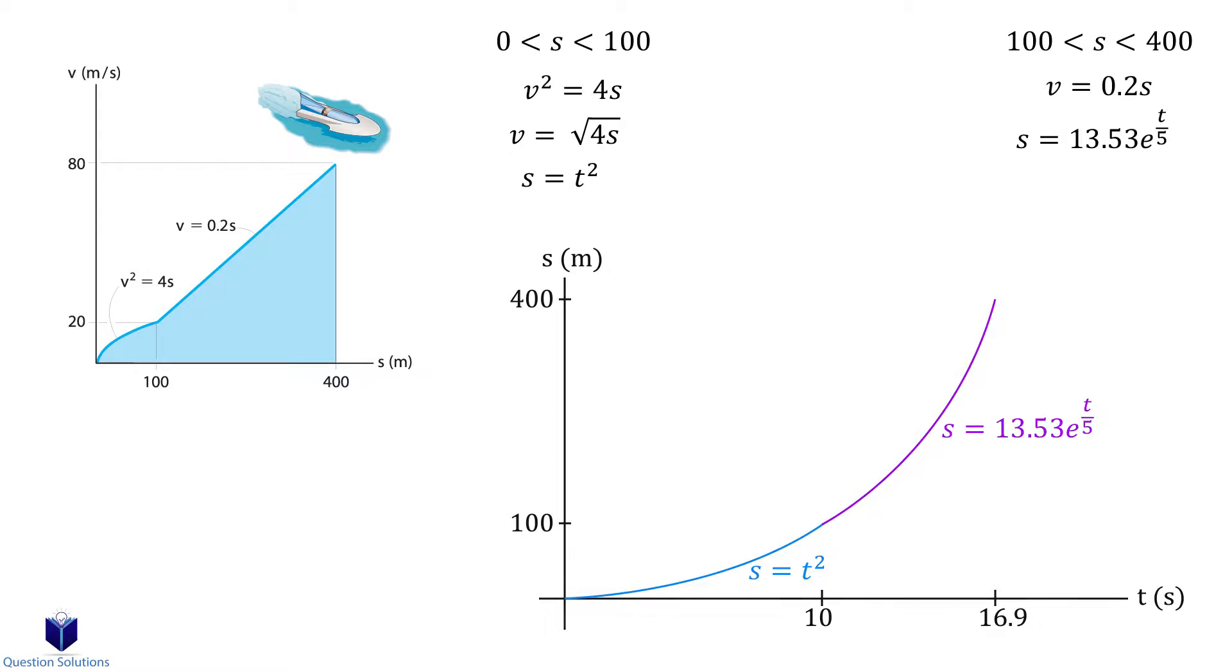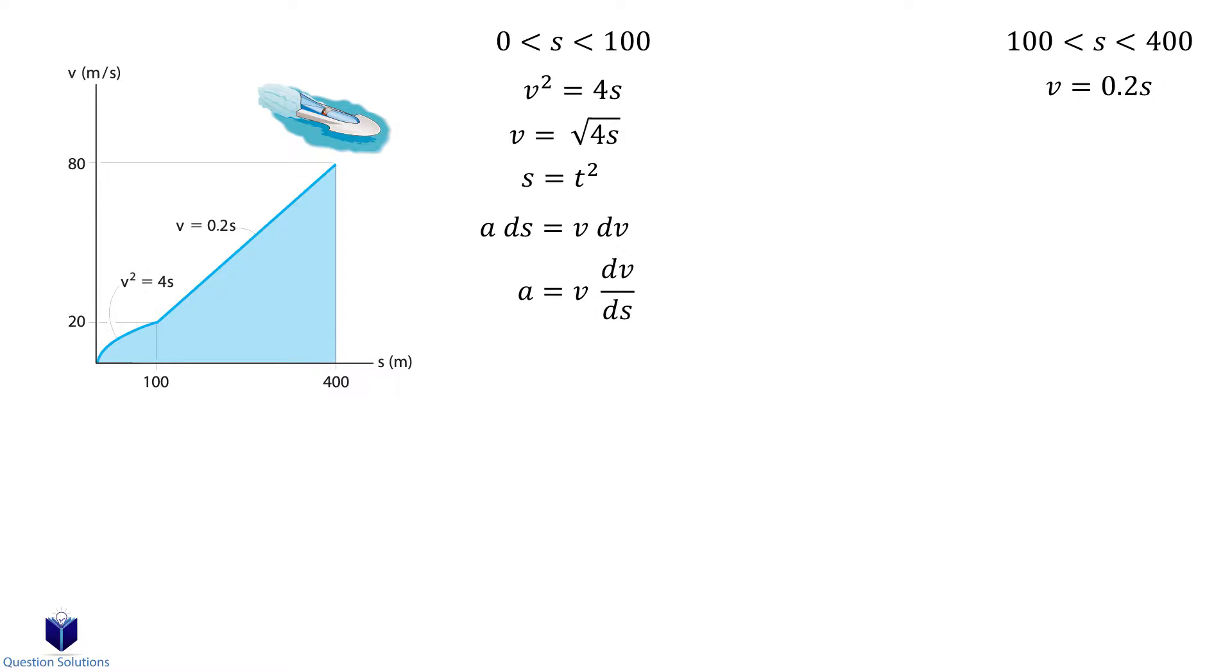Now let's focus on getting the acceleration equations. To do this part we need to remember a·ds is equal to v·dv. Then we can isolate for a. So we can write it as a is equal to v multiplied by dv over ds. Now we need to figure out the dv over ds part.